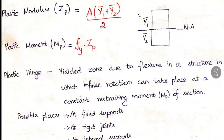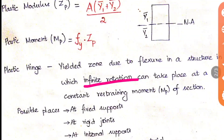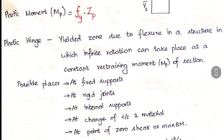The third important term is the plastic hinge. A plastic hinge is the yielded zone due to flexure in a structure at which infinite rotation can take place. It is not a rigid support and does not transfer moment or force. Infinite rotation can take place at a constant restraining moment MP. Where infinite rotation acts along with the restraining moment MP, that point is called the plastic hinge.